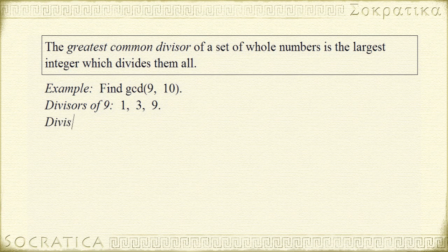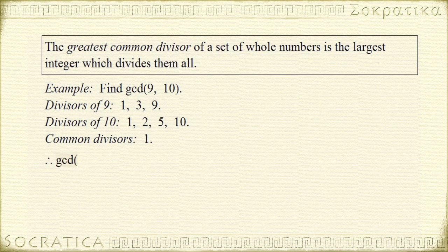Let's see the divisors of 10. They are 1, 2, 5, and 10. So let's look at the common divisors. In this case, the only divisor they have in common is 1. So, therefore, the greatest common divisor of 9 and 10 is 1.